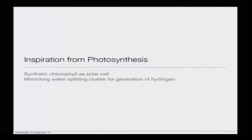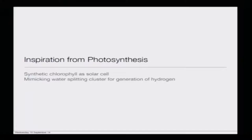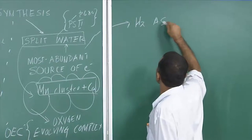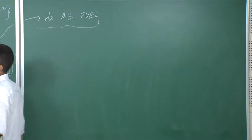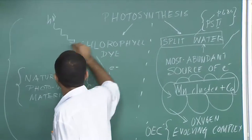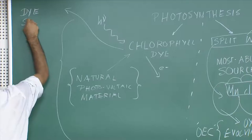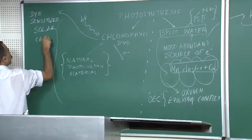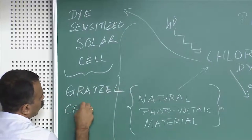If you look at the slide, these are the two zones where we have drawn inspiration: synthetic chlorophyll as solar cells on one part, and the second one mimicking the water-splitting cluster for generation of hydrogen. Significant amounts of hydrogen are generated, and this is what we call hydrogen as fuel — which is what you see in hybrid cars. Talking about the chlorophyll dye, there are several other dyes, and we will have an exclusive lecture on dye-sensitized solar cells, also commonly called Grätzel cells after its innovator.